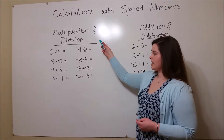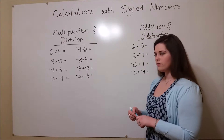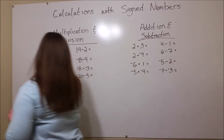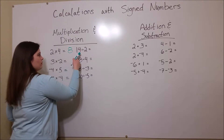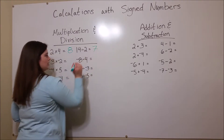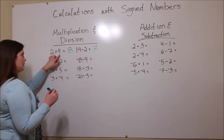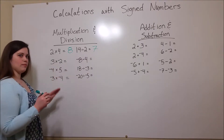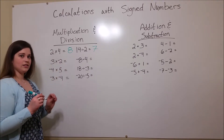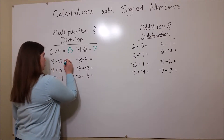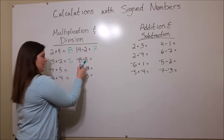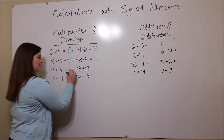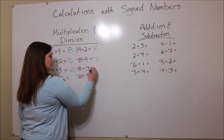Now let's look at multiplication and division of signed numbers. When both of the numbers being multiplied or divided are positive, that makes the answer pretty straightforward. For example, we know that 2 times 4 equals 8, and 14 divided by 2 equals 7. This is because when you have two positive numbers being multiplied or divided, the answer is also positive. However, when you have one positive and one negative number, the answer is negative. That is, 3 times negative 2 is negative 6. Negative 8 divided by 4 is negative 2. Negative 4 times 5 is negative 20. And 18 divided by 3 is negative 6.